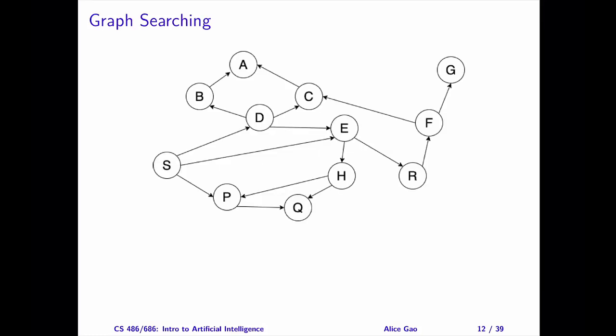Let me describe the components of a search problem using this search graph. Each node represents a state. S is the initial state and G is the goal state. A search problem may have multiple goal states. One option is to list all the goal states. Another option is to define a goal test, a boolean function that takes the state and returns true if and only if the state is a goal state.